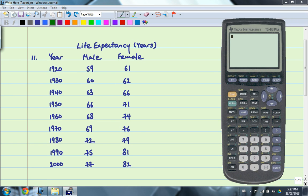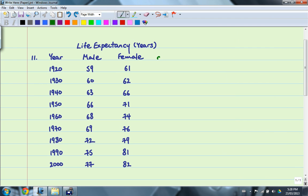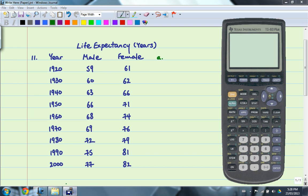Part A asks us to create two scatter plots, one for the male data and one for the female data. So I'm going to go ahead and do that first. So how do I use a calculator to do this? The first thing you need to do is go to Stat, Edit, and you want to enter all your data in L1, L2.